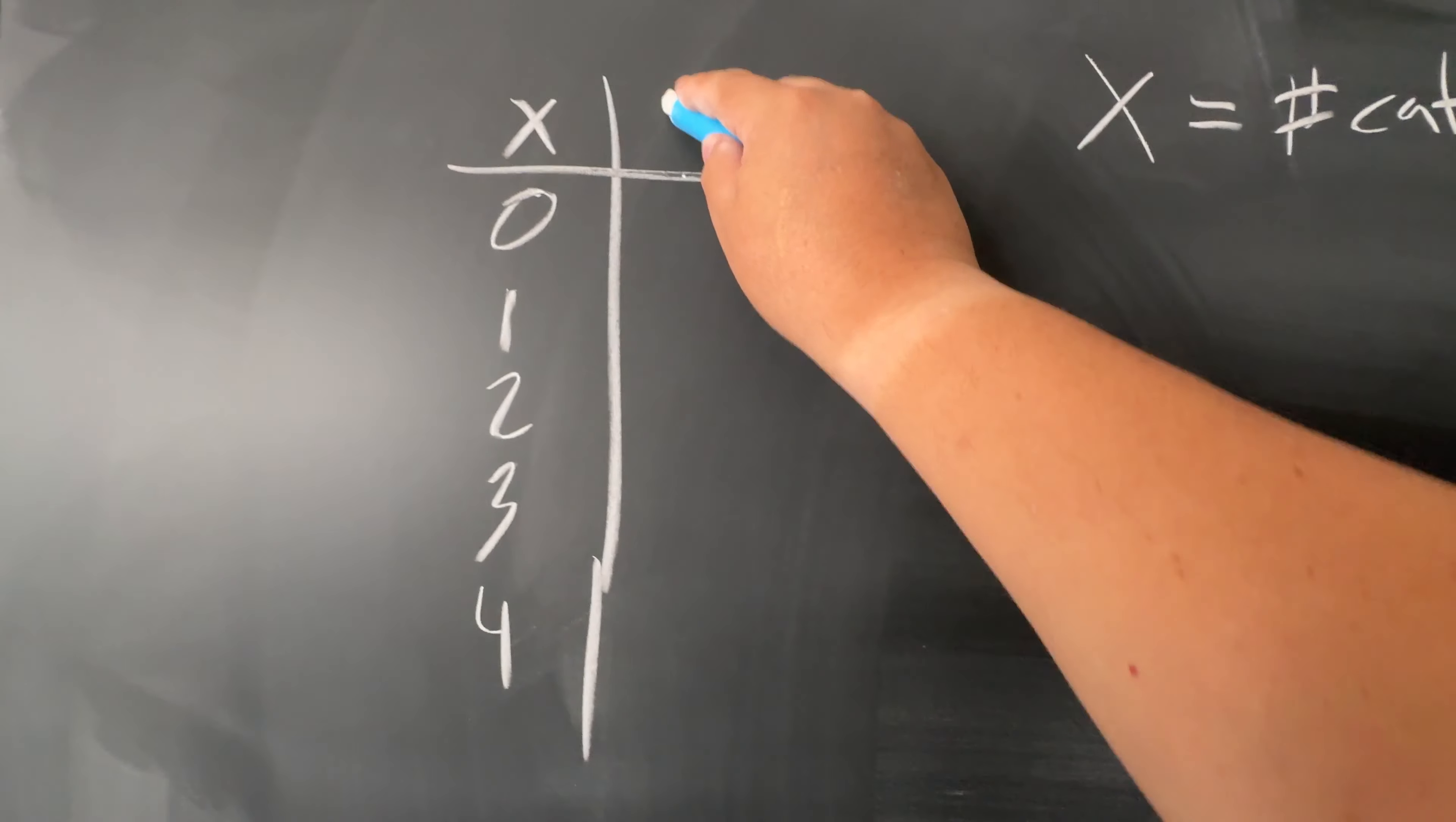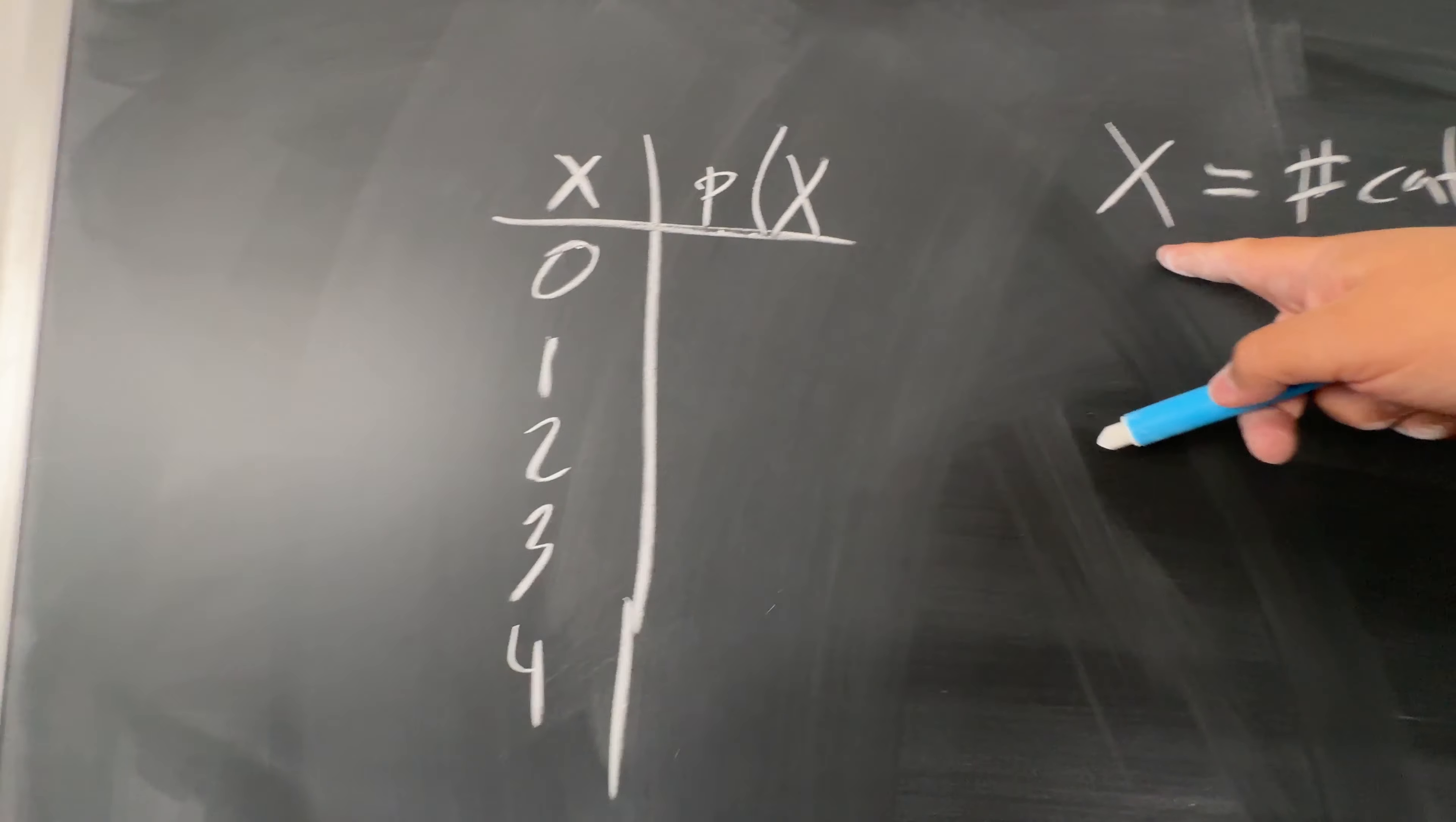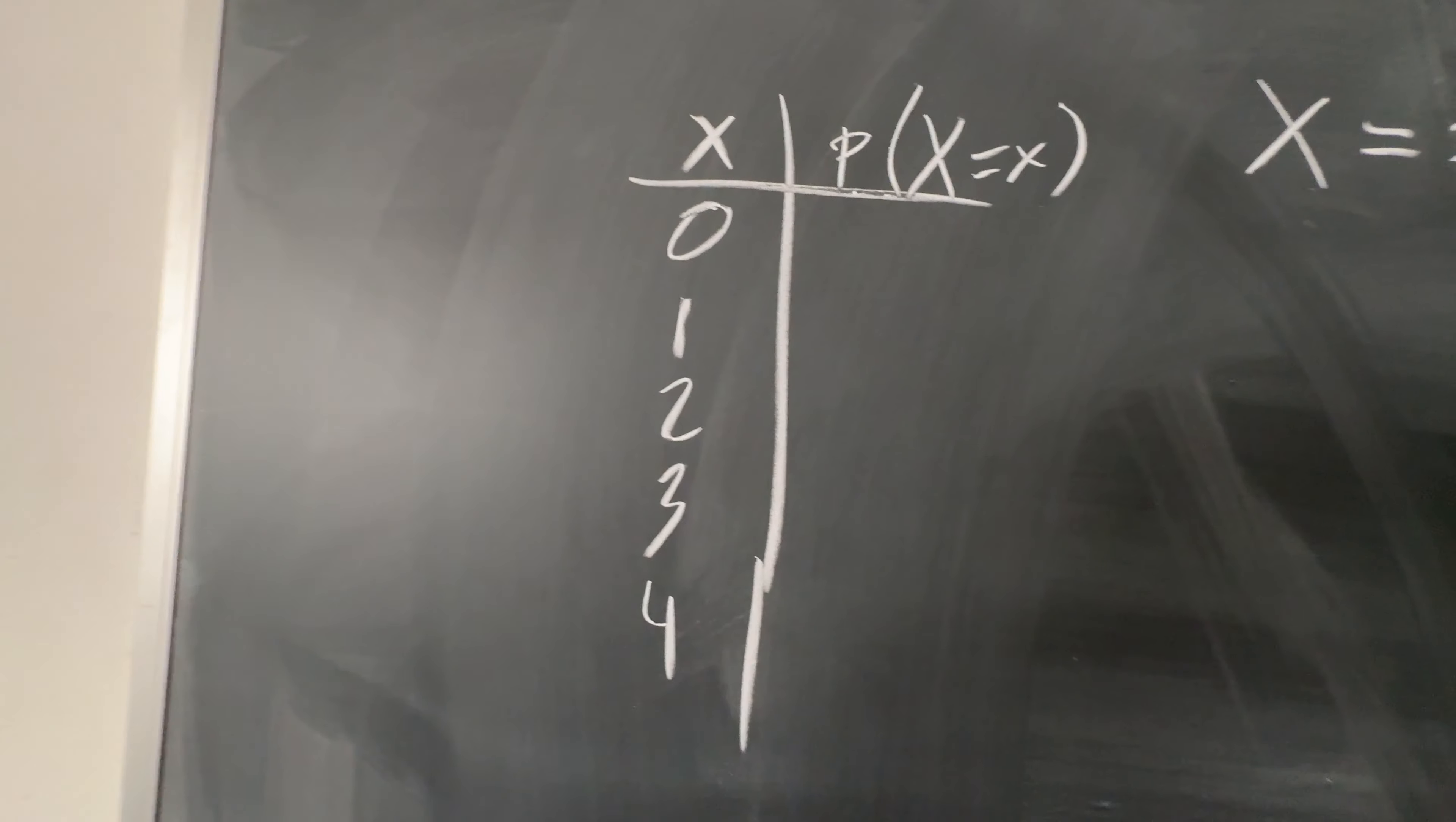And then you have a probability, small p, and then capital X, which is this right here, equals the small x, which is this right here.